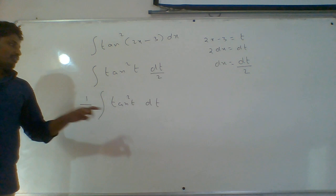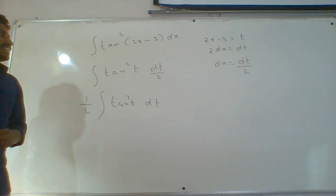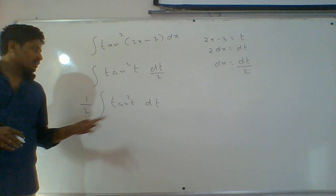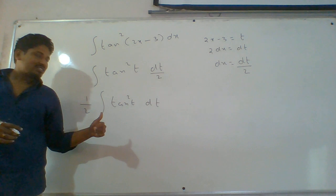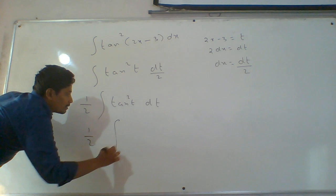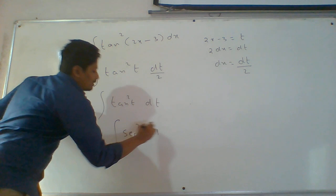There is no direct formula for this function. Using the trigonometric identity: sec square theta minus tan square theta equals 1, so tan square theta equals sec square t minus 1. The total becomes integral (sec square t minus 1).